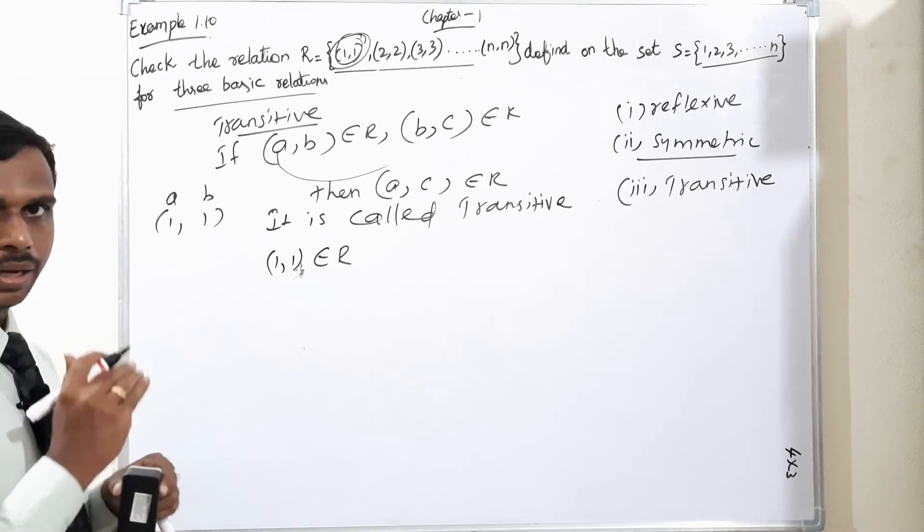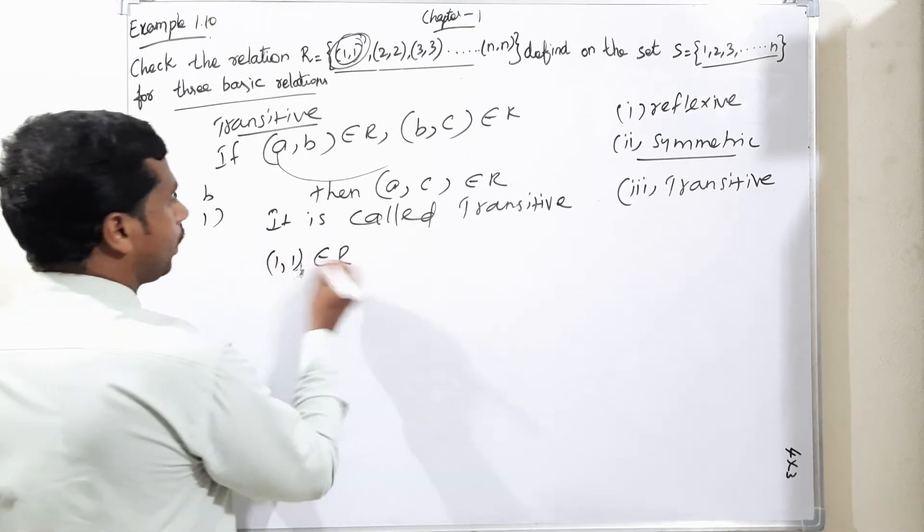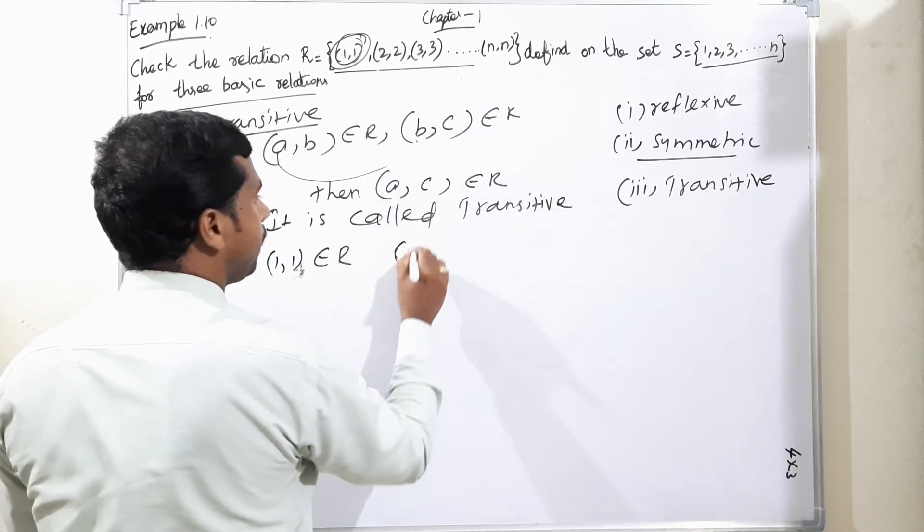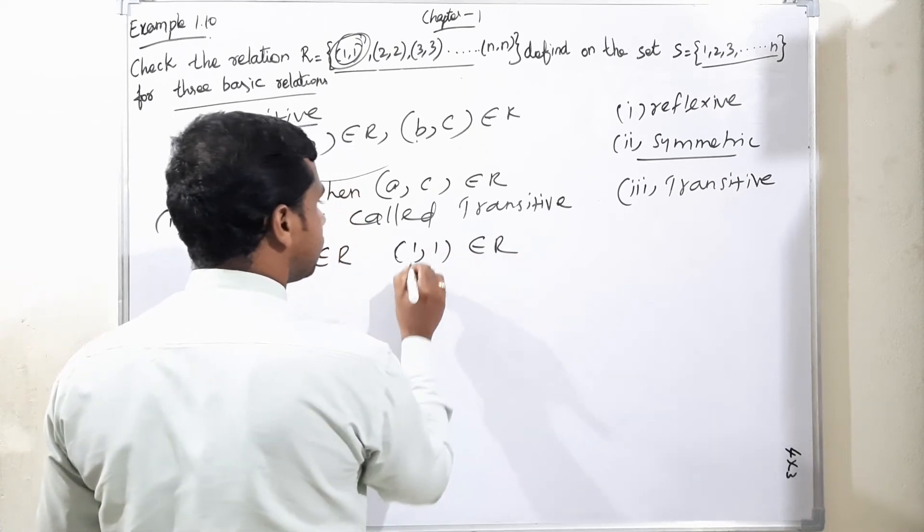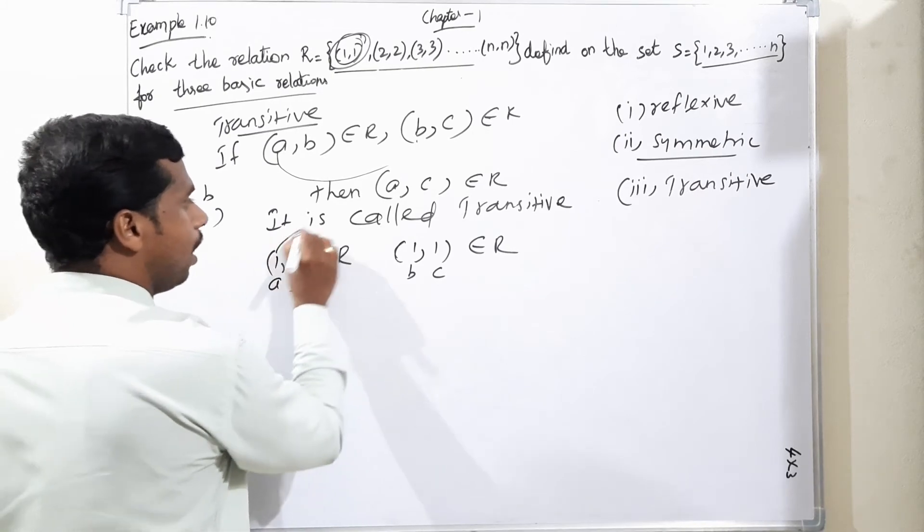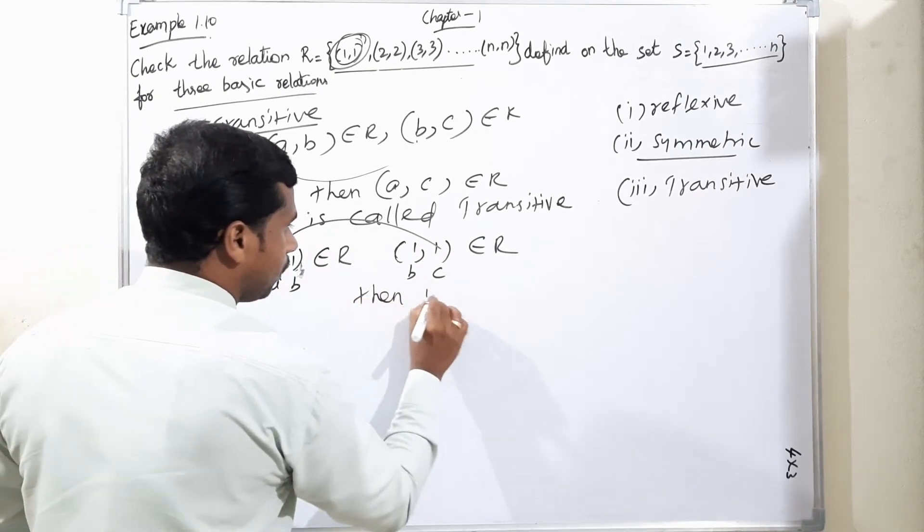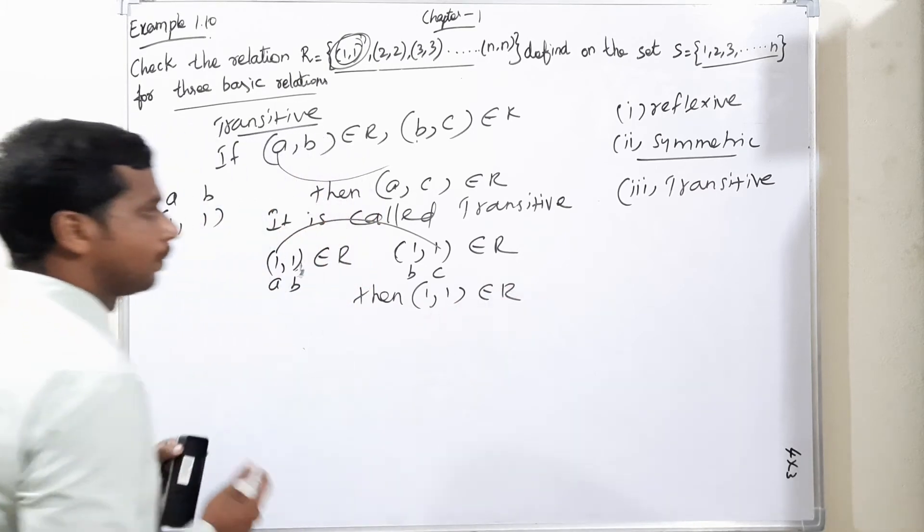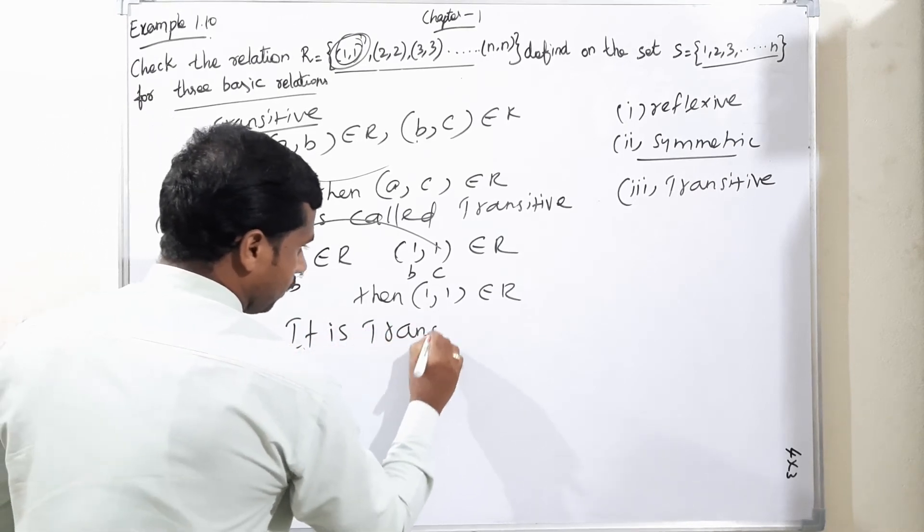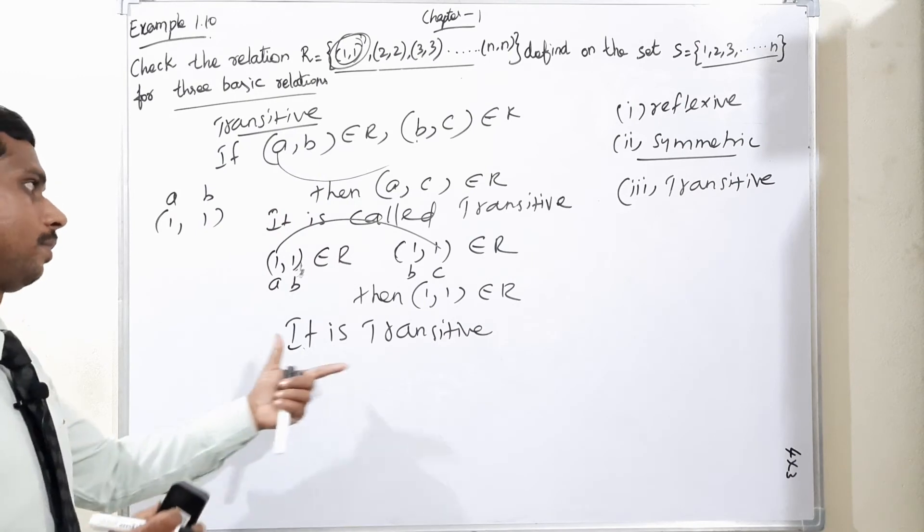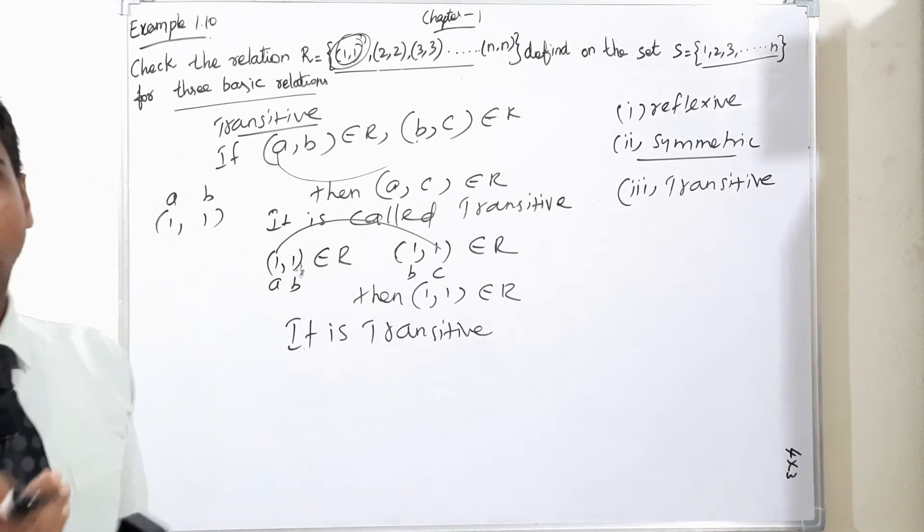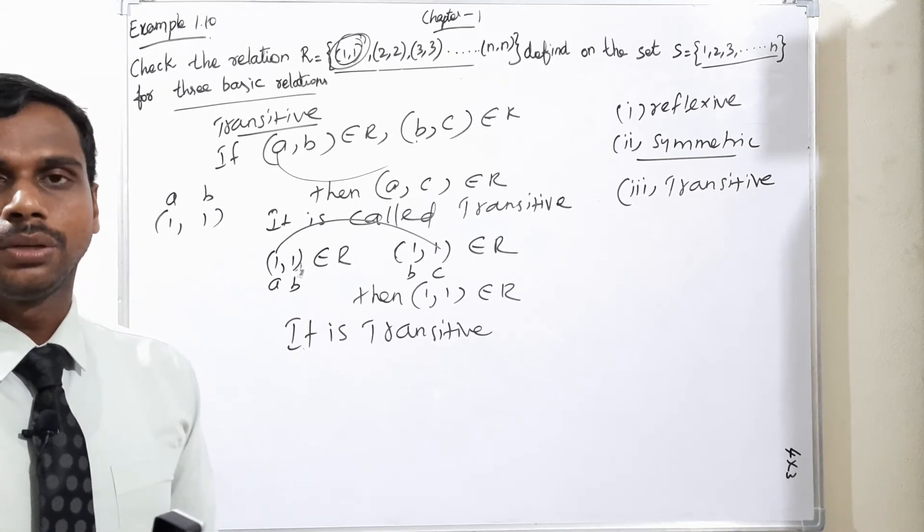If a equals 1 and b equals 1, first and last, then (1,1) also belongs to R. If it will be equal, we can say it is transitive.